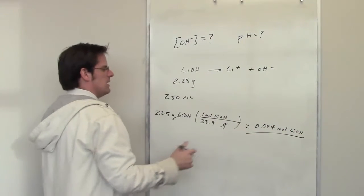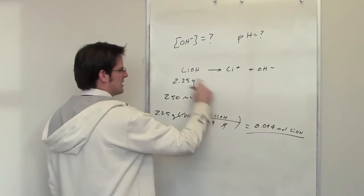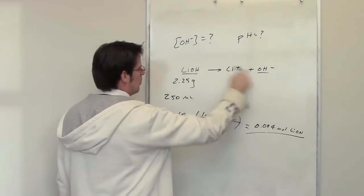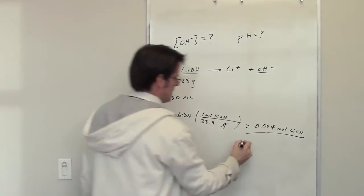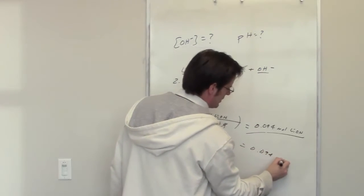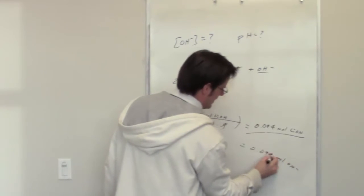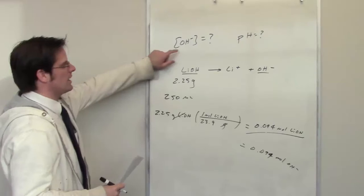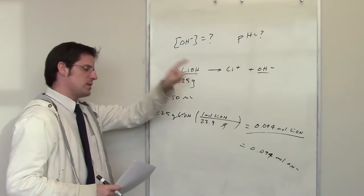Now I'm going to jump ahead a little bit. If I've got 0.094 moles of lithium hydroxide and the lithium hydroxide and hydroxide are present in a one-to-one ratio, that means I'm going to get 0.094 moles of hydroxide. I need the hydroxide concentration, which is moles of hydroxide divided by liters.